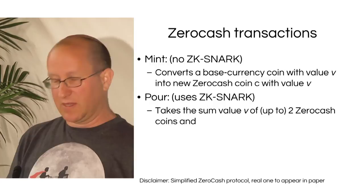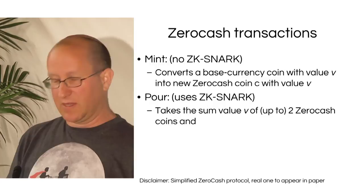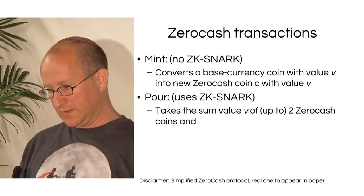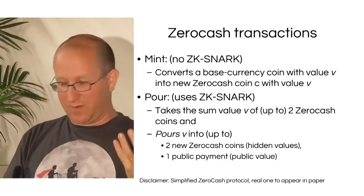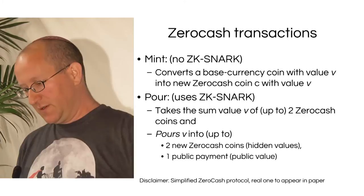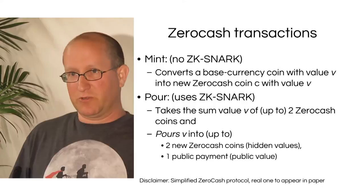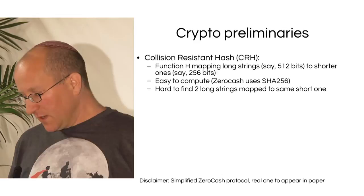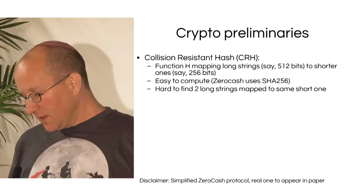The main transaction is the Pour, where the moon math comes in. It allows you to take the combined value of up to two existing ZeroCash coins and pour that value into up to two new ZeroCash coins, plus one public payment that can go back to the base currency, be used to pay taxes, or cover transaction fees. This is a simplified description; the full details are far more intricate and will appear in the paper.